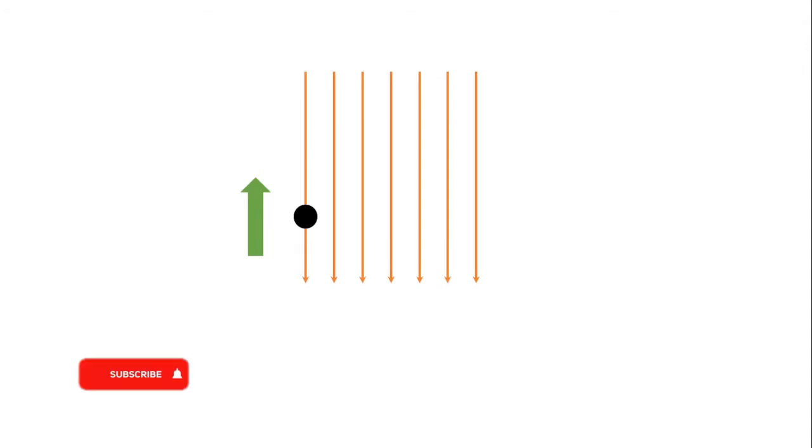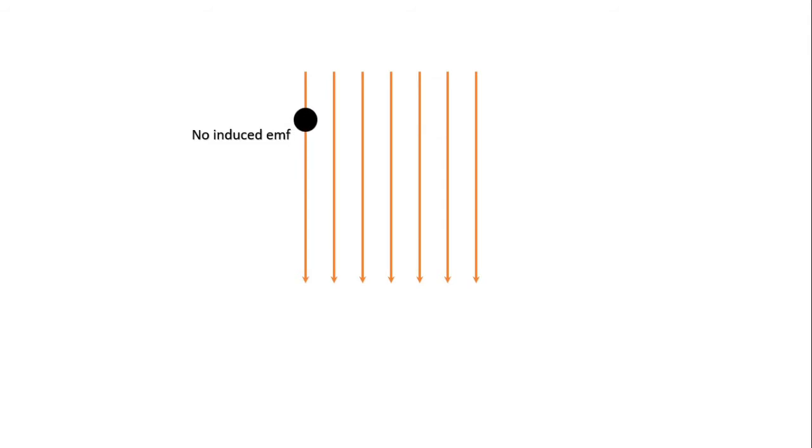Now let's assume a conductor is placed in this magnetic field. If we give upward motion to this conductor, this conductor will move upward. But you can see from the diagram that there is no change of flux occurring with this conductor.